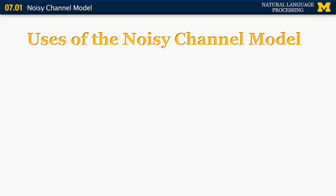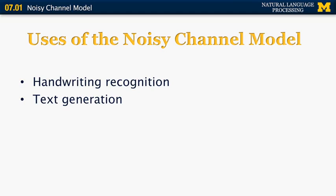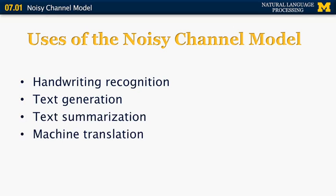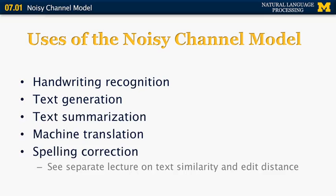What are some possible uses of the noisy channel model? We mentioned machine translation, but there are many others. It can be used in handwriting recognition, where the input is a bitmap of what you wrote and the output is an English sentence. It can also be used in text generation, text summarization, machine translation, and spelling correction. In spelling correction, we can use it to model the probability that a certain type of mistake is going to be made. There's a separate lecture on edit distance and text similarity that will cover this problem.